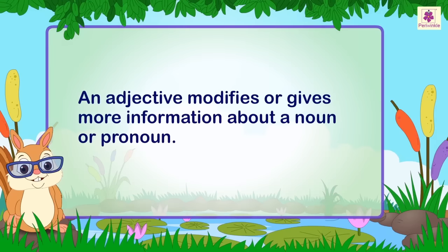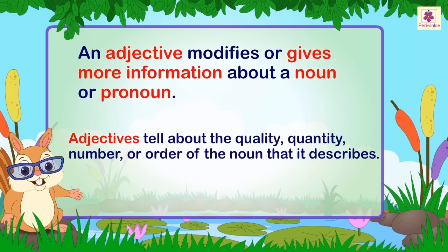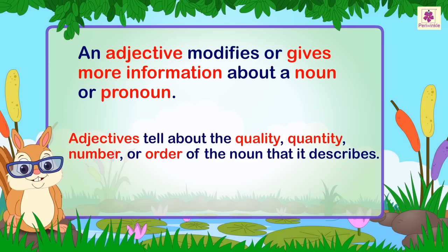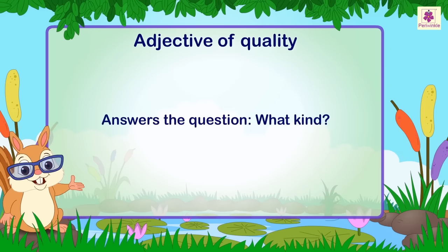Adjectives: an adjective modifies or gives more information about a noun or pronoun. It tells about the quality, quantity, number, or order of the noun that it describes. An adjective of quality answers the question 'what kind?'